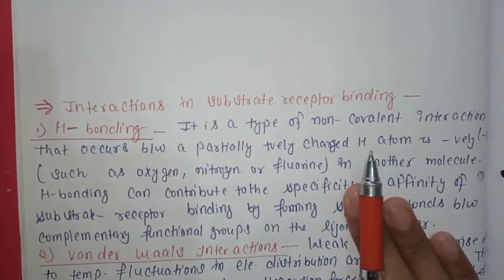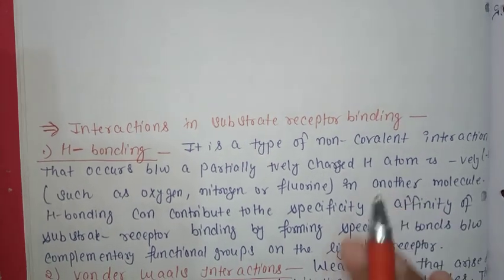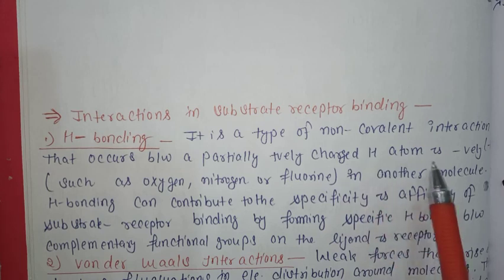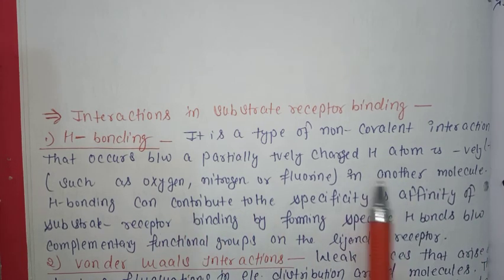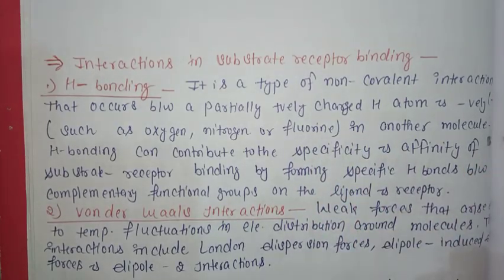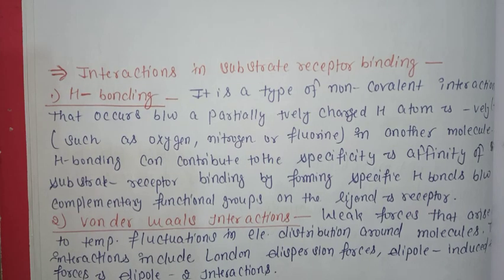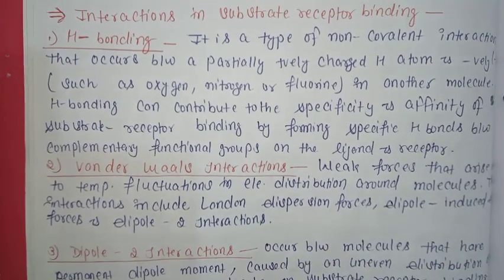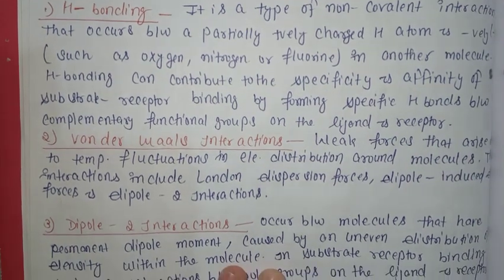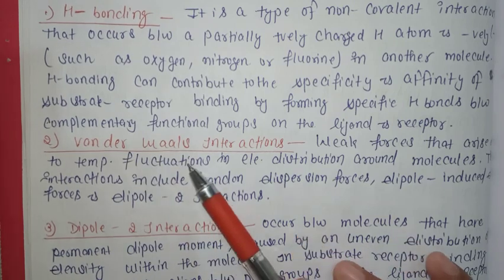Next we consider the interactions used in substrate-receptor binding. Hydrogen bonding is a type of non-covalent interaction that occurs between a positively charged hydrogen atom and an electronegative atom in another molecule, such as oxygen, nitrogen, or fluorine. Hydrogen bonding can contribute to the specificity and affinity of substrate-receptor binding by forming specific hydrogen bonds between complementary functional groups on the ligand and receptor.